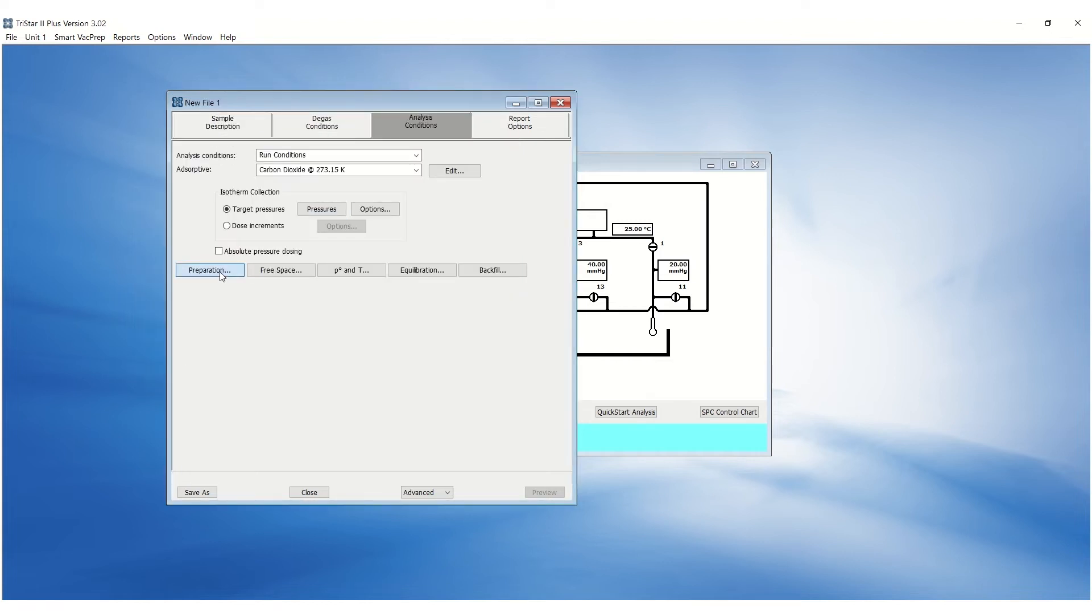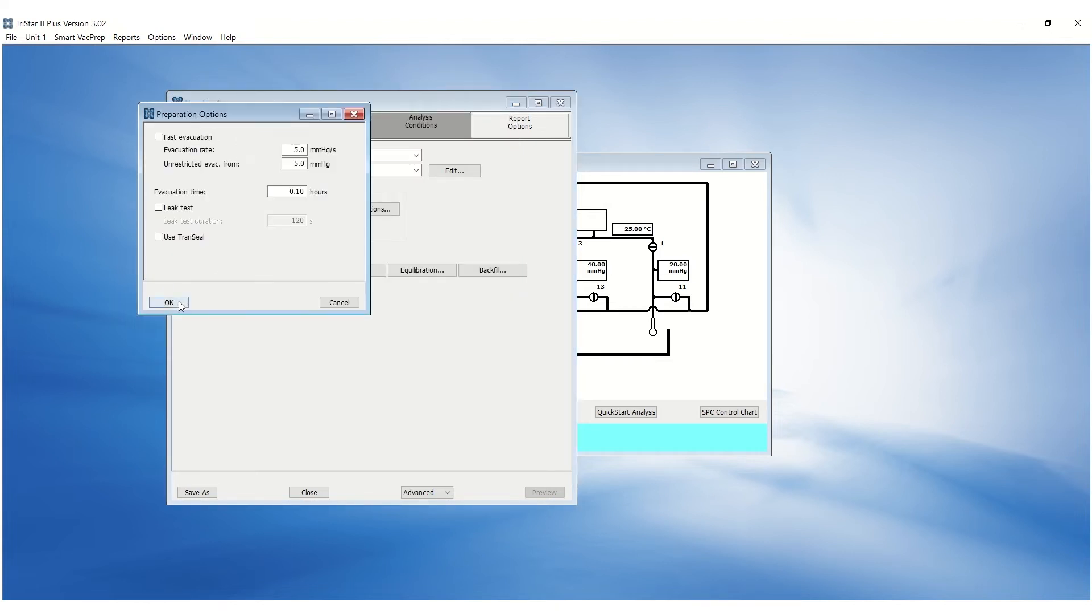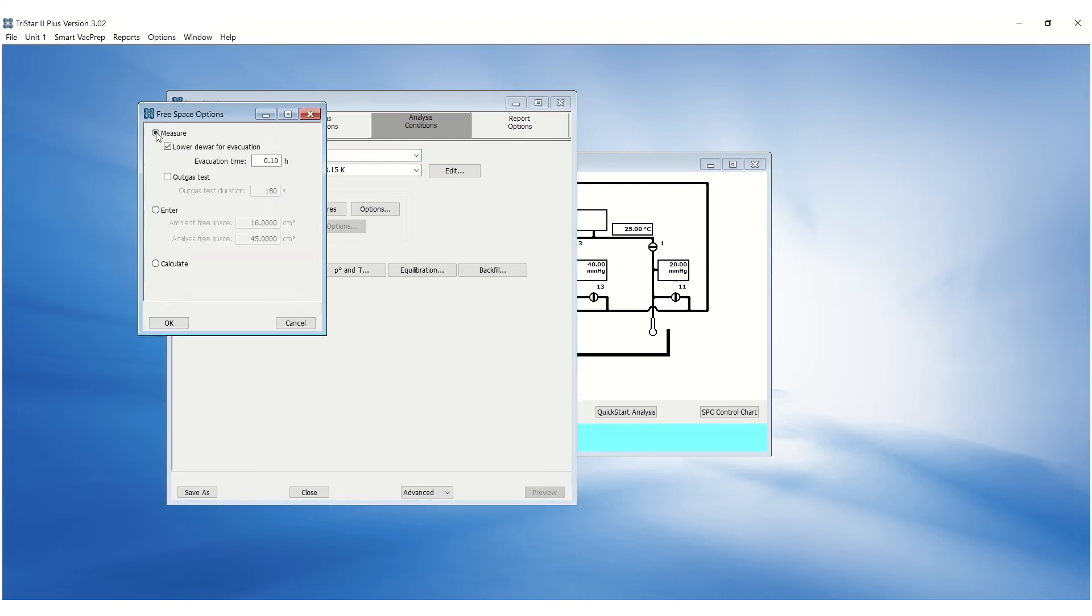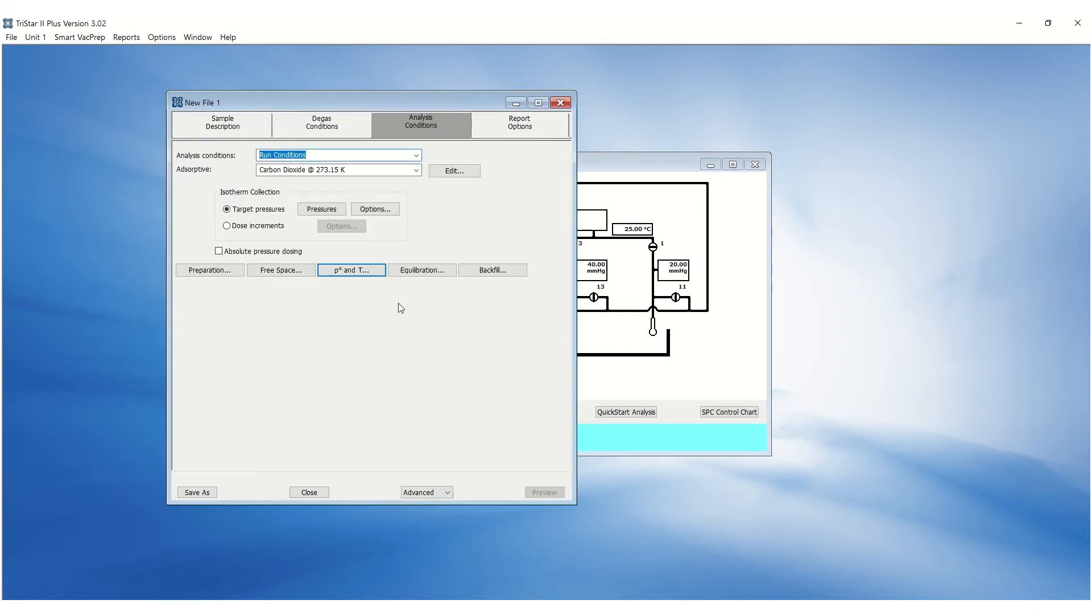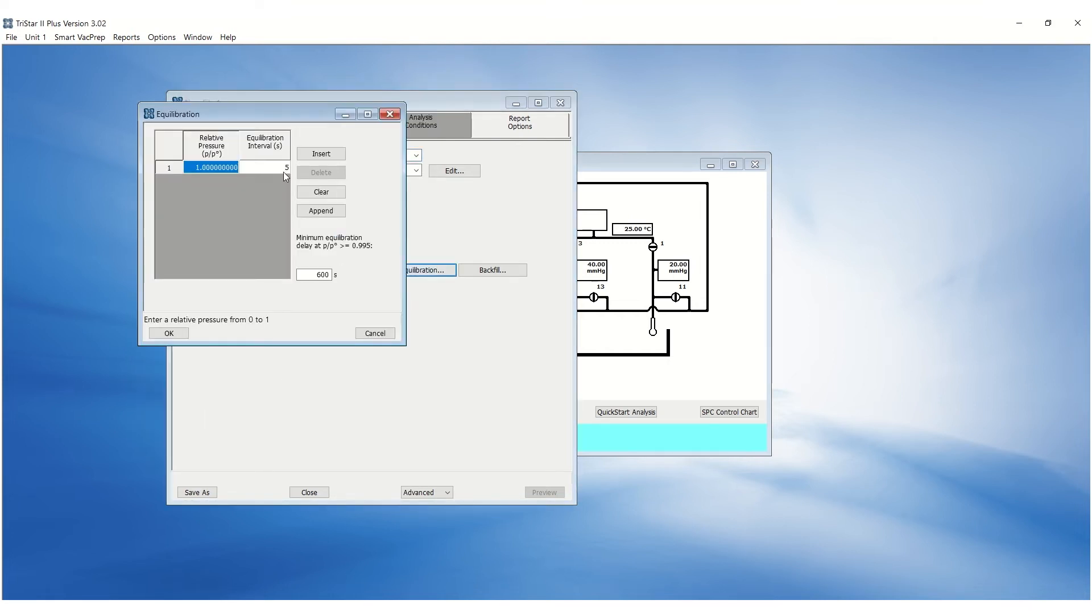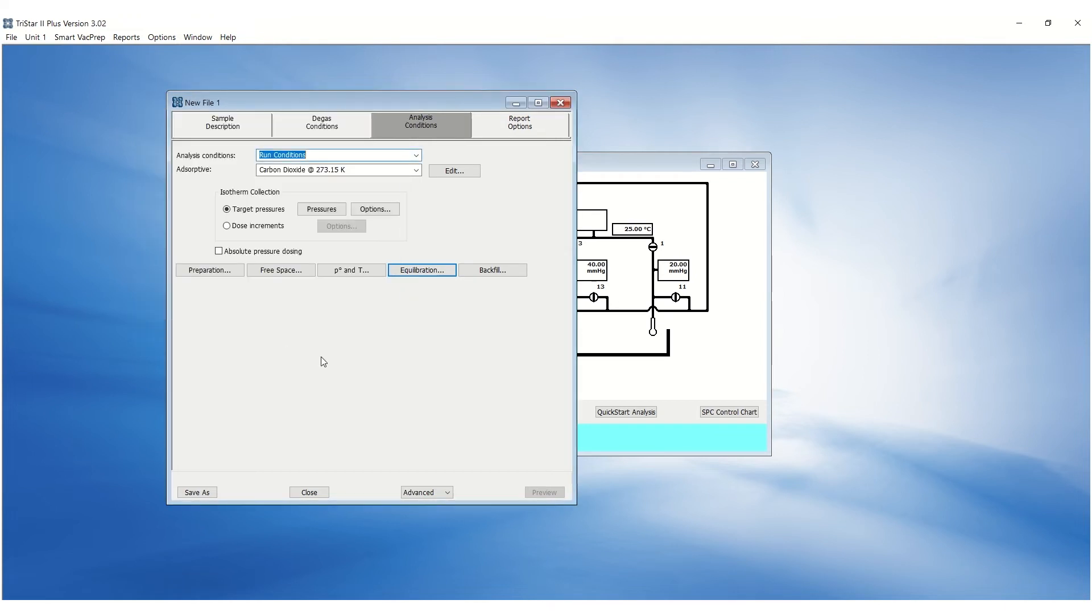Generally, the preparation options can be left as default. Select measure free space. Select calculate P0 and enter the bath temperature as 273.15. Set the equilibrium intervals as 10 seconds. These parameters are highly sample dependent.